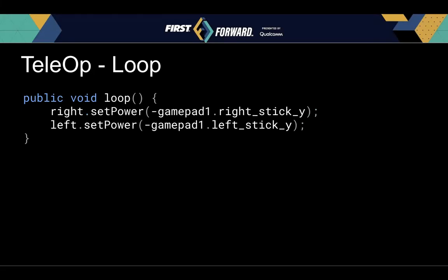Now we look at the loop function. All we have to do is update the motor powers to whatever our gamepad sticks are. The gamepad objects and the hardware map are all inherited from IterativeOpMode, so you just access the values. The Y axis of the joysticks are inverted on the gamepads, so we put a negative sign in front of them. In this instance we're using tank steering, so the right stick will control the right motor and the left stick will control the left motor. And that's all you need for your first TeleOp — a basic push bot.